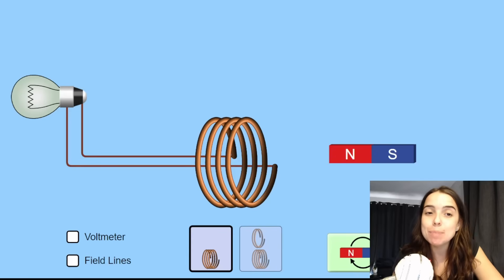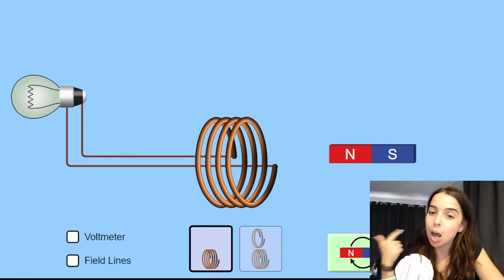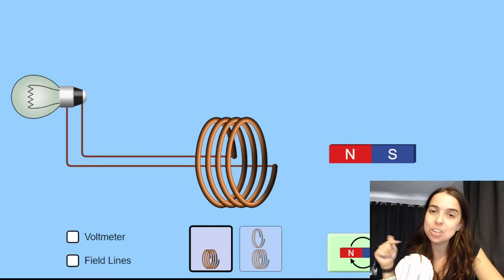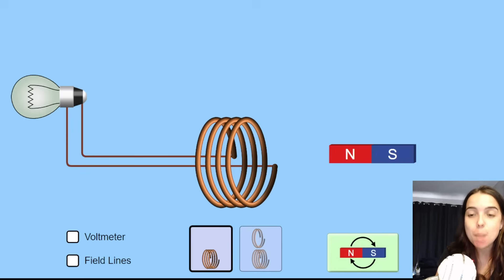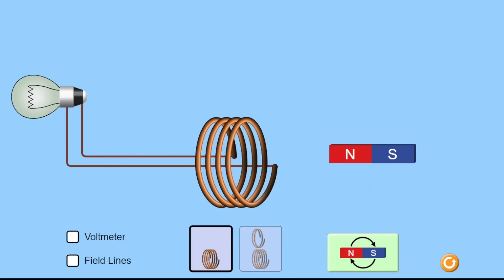What you see behind me is called a PhET simulation — I will link the simulation in the description box below if you want to try it yourself. On the screen I have a loop or coil, which is my conductor, and it's attached to a light bulb.